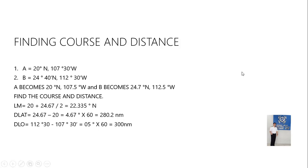To find course and distance, first get Lm — the middle latitude. So 20 degrees plus 24.67 degrees, divided by 2, gives 22.335 degrees North. Kindly follow along on your scientific calculator and do the computation while I am discussing. Middle latitude will be 22.335 degrees North.